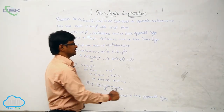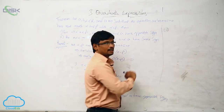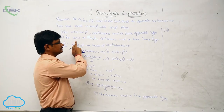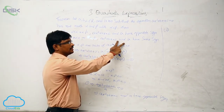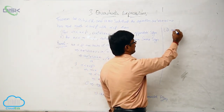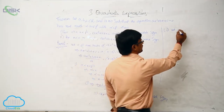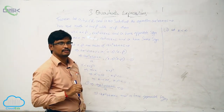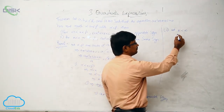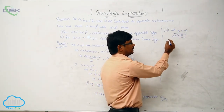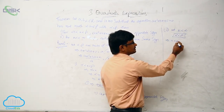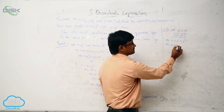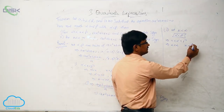Now we look at the second part. In the second part we have two cases: one is x less than alpha, and the other is x greater than beta. Using each separately, we have to prove that ax² + bx + c and a have the same sign. First, I am considering the condition x less than alpha. In the given problem, we are told alpha is less than beta. From x less than alpha and alpha less than beta, we can also write x less than beta.